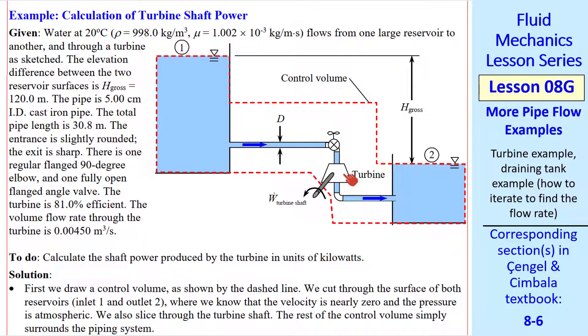We have flow from one tank to a lower tank with a turbine that generates power through this shaft. There's one elbow and one angle valve. This is both an elbow and a valve together. We give the fluid properties, the elevation difference, pipe diameter, and knowing the kind of pipe we can look up the roughness. We have total pipe length, the turbine efficiency, and the volume flow rate. We want to calculate the shaft power produced by this turbine in kilowatts.